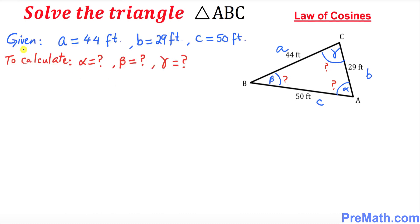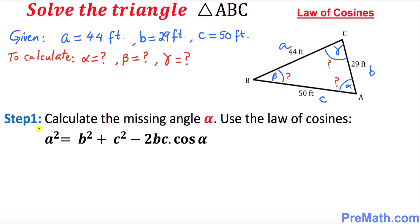Our given values are: side a equals 44 feet, side b is 29 feet, and side c is 50 feet. We need to calculate angle alpha, angle beta, and angle gamma. In the very first step we need to calculate the missing angle alpha, and we will be using this law of cosines right up here.